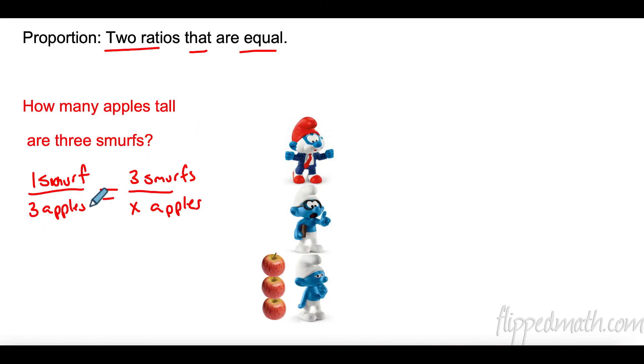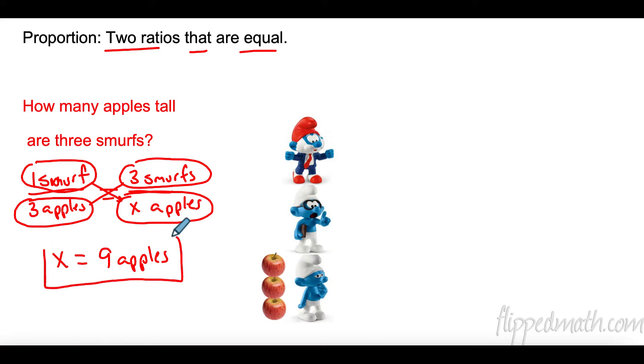How do we solve proportions? It's everybody's favorite thing. I'm going to take the top, the numerator on one side, and I'm going to multiply it by the denominator on the other side. So, one times X is 1X. Then I'm going to take the denominator and multiply it by the numerator on the other side. Three times three is nine. So, how many apples is three Smurfs? Three Smurfs are nine apples. And what that's called, that actually has a name. That's called cross-multiplying.